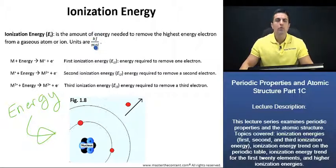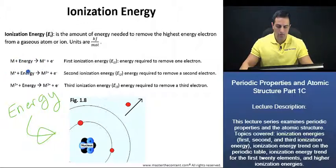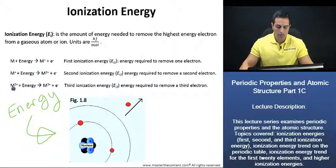More than one electron can be removed from an atom, and it takes place sequentially. There is an initial amount of energy required, and then we're left with a monovalent positive ion. With additional energy, we can remove another electron, leaving us with a dipositive ion. Then with energy again, we see that another electron is removed.